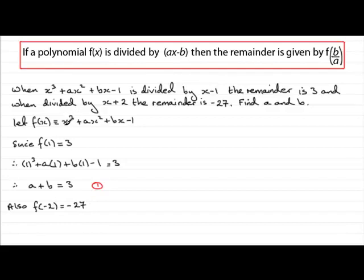This time minus 2 all cubed is going to be minus 8 so we have minus 8. And then minus 2 squared is 4 so we have plus 4a and then we have minus 2b and then minus 1 and that equals minus 27.